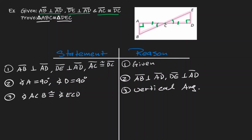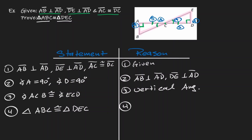Notice the combination that we have here: an angle followed by a congruent side followed by a congruent angle. We have angle-side-angle on the left triangle, and angle-side-angle on the right triangle, so we're done. We can now say that triangle ABC is congruent to triangle DEC, and the reason is the angle-side-angle congruency theorem. This takes care of the angle-side-angle congruency theorem.